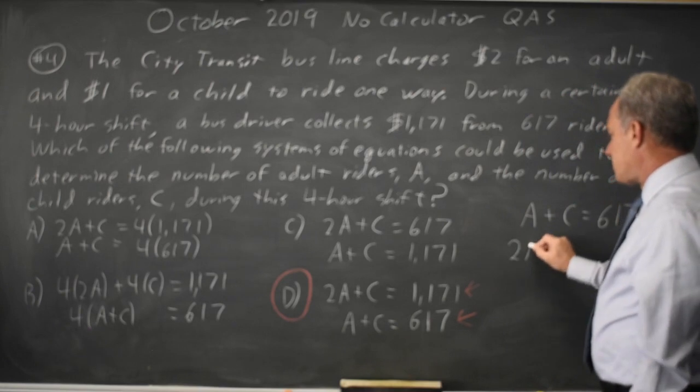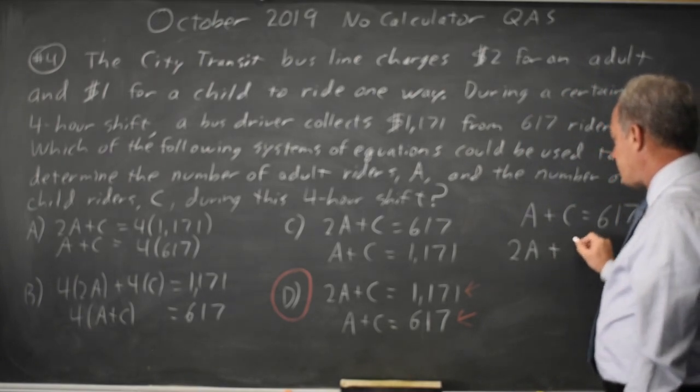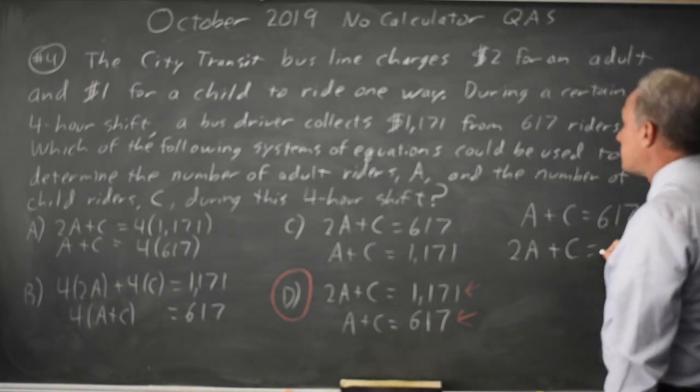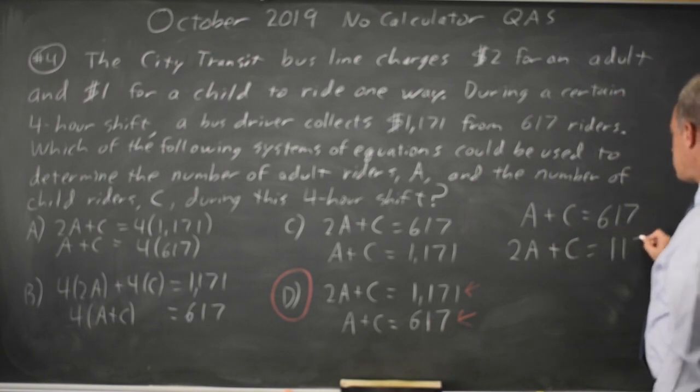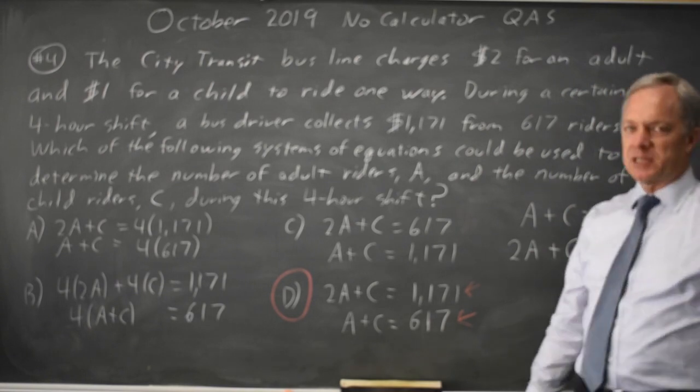So the revenue from adults is twice the number of adults. The revenue from children is the number of children. And that equals the total revenue, 1171. So choice D would be the correct answer.